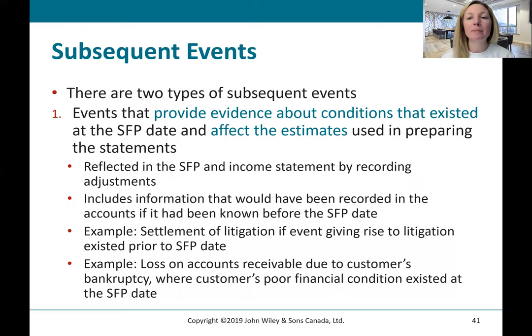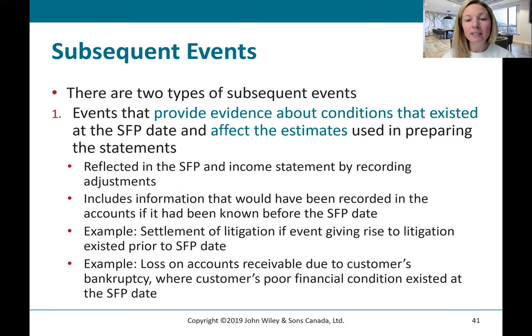There are two types of subsequent events. The first type provides evidence about conditions that existed at the statement of financial position date and affects the estimates used in preparing the statements. These are reflected in the financial statements by recording adjustments — they include information that would have been recorded if known at the statement of financial position date. Examples include a settlement of litigation where the event giving rise to it existed before the statement date, or a loss on accounts receivable due to a customer's bankruptcy that existed before the statement date.